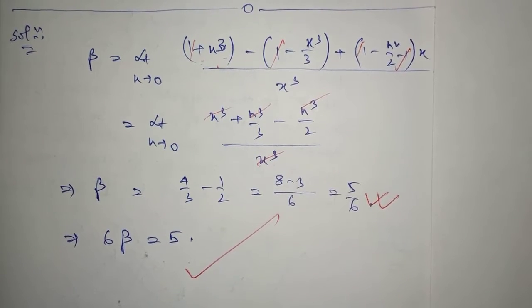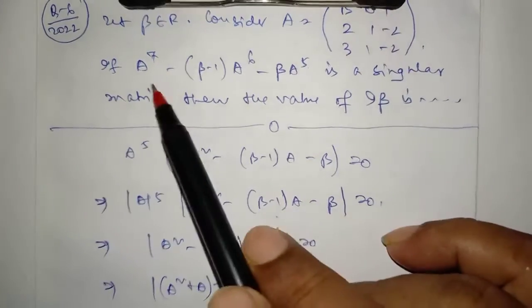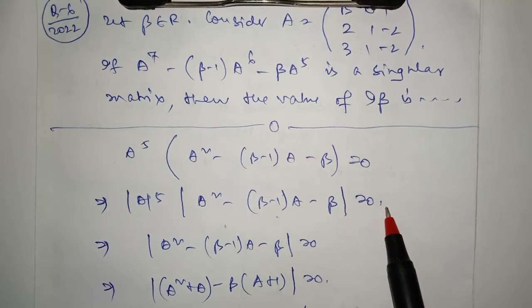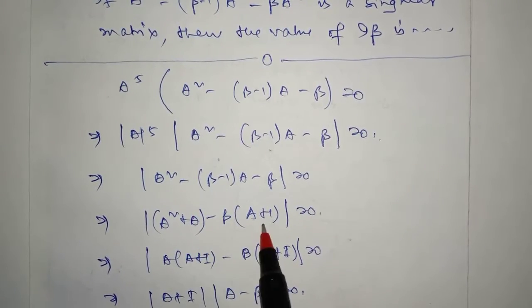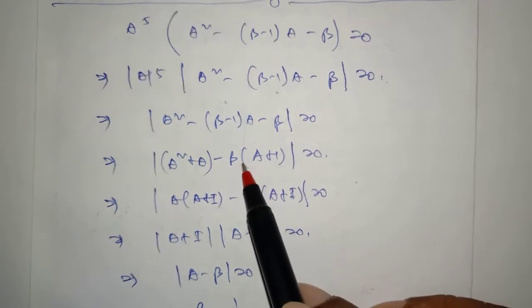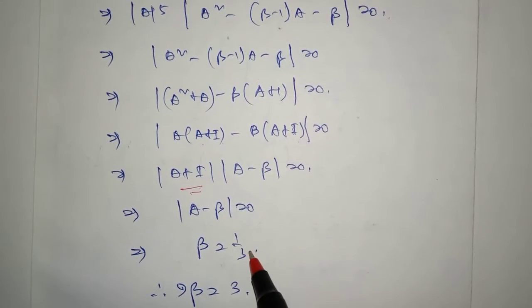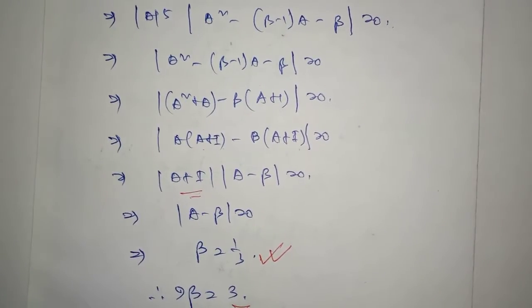Question 6: Let β ∈ ℝ. Consider matrix A. Since A is a singular matrix, its determinant equals zero. The matrix C is non-zero, so we can divide through. Factoring: C(I + A) and (B + I) form. Since C is non-zero, (A − βI) has determinant zero. Simplifying gives β = 1/3, and 9β = 3.